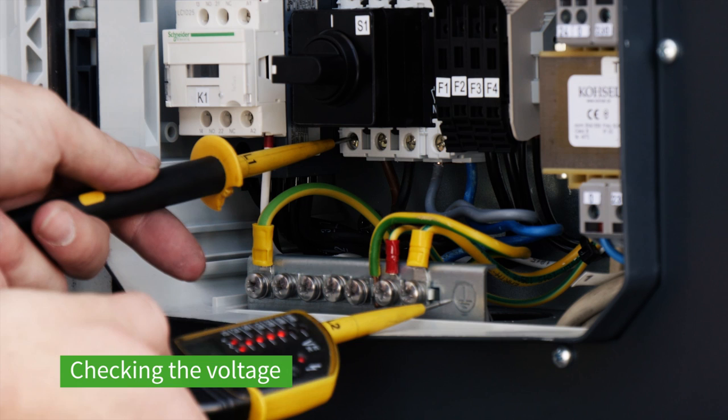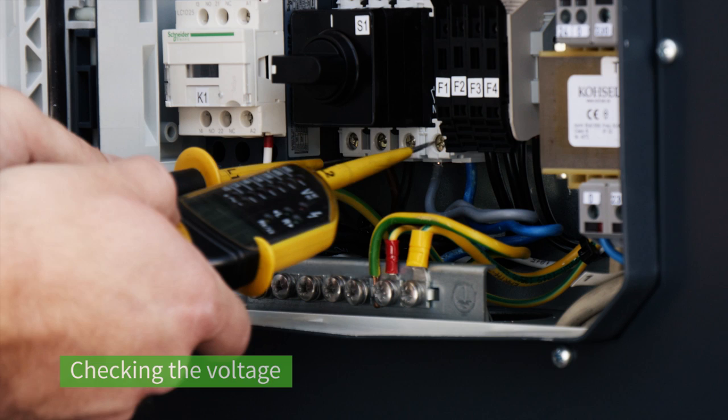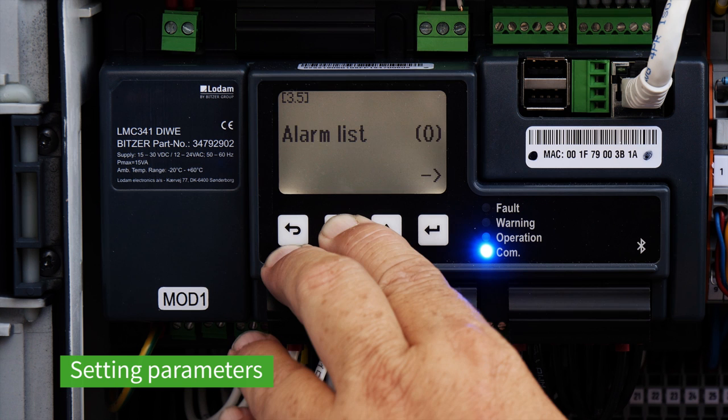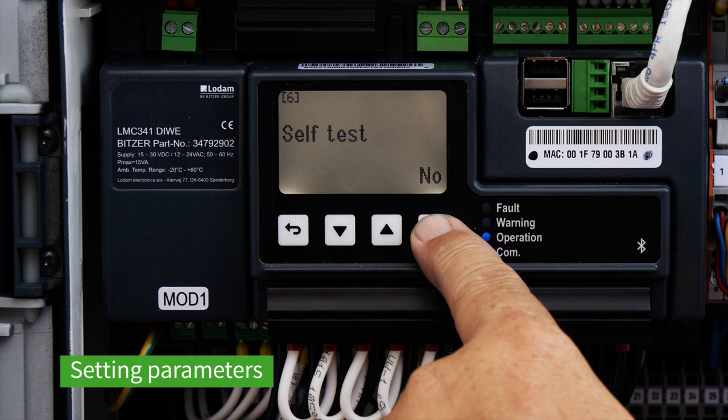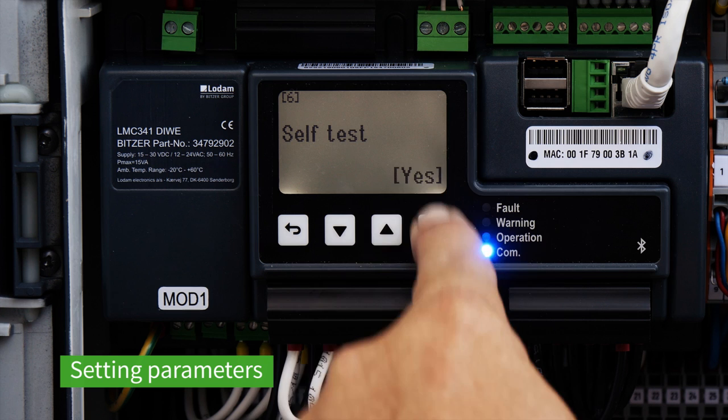Now is the time to check the voltage and the phase sequence. Now parameterize the controller which only requires a few steps thanks to the setup guide. Then initiate the self-test. This feature makes it possible to check all the components in the echo star and ensure they are operating correctly and without any errors.